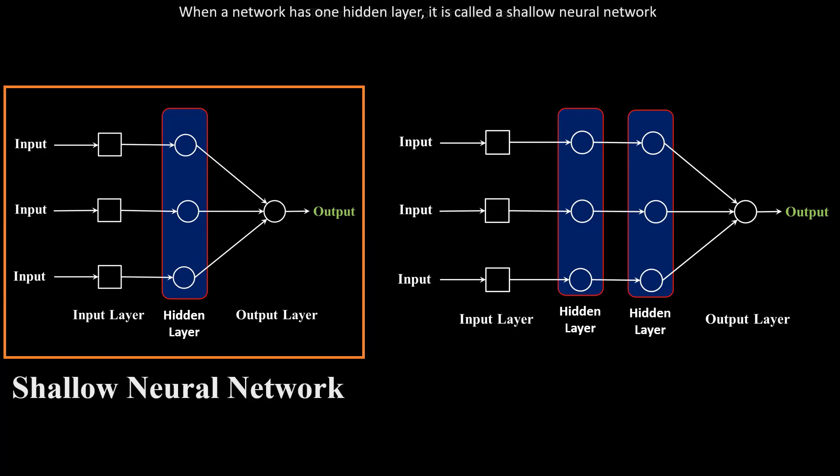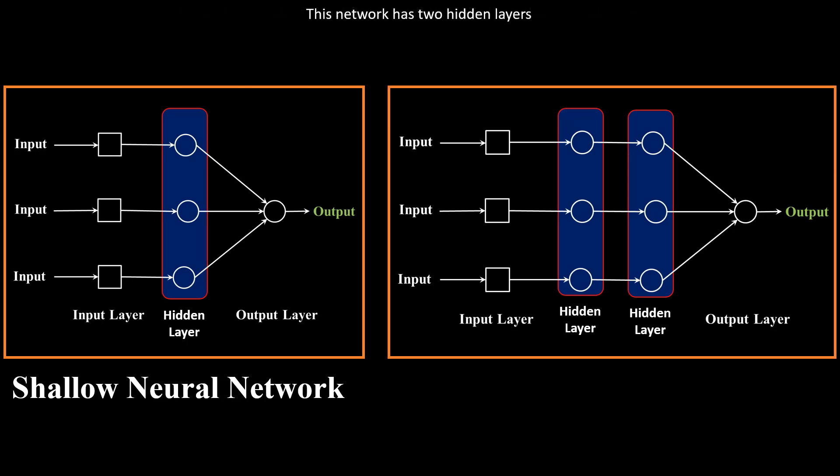When a network has one hidden layer, it is called a shallow neural network. This network has two hidden layers. When a network has more than one hidden layer, it is called a deep neural network.